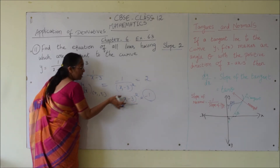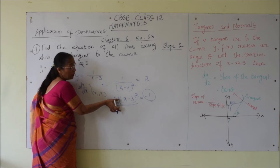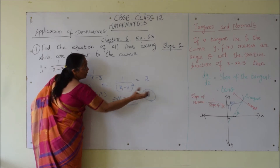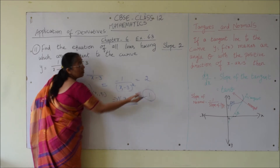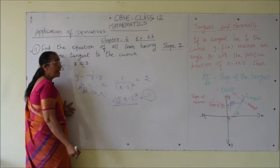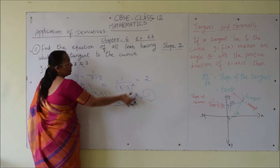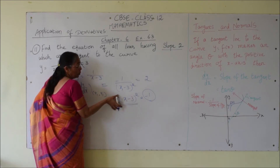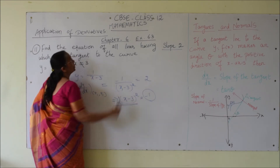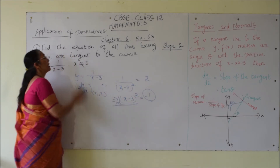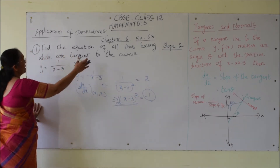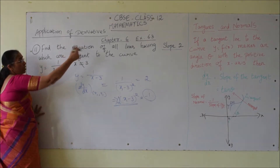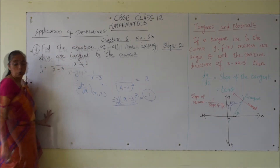Since the perfect square is always positive and 2 is also positive, this positive value cannot equal a negative value. Therefore there is no tangent to the curve having a slope of 2.